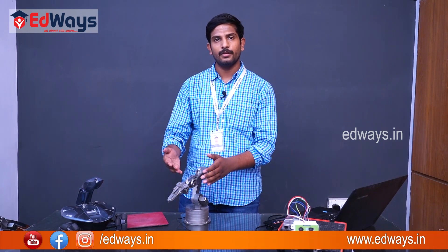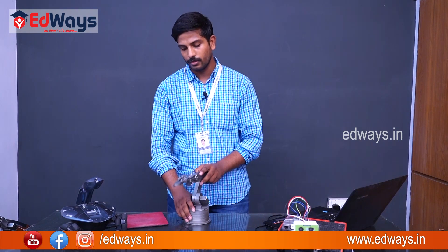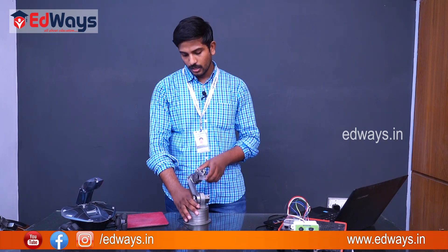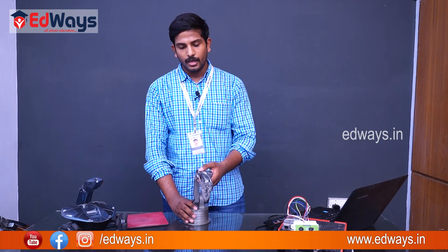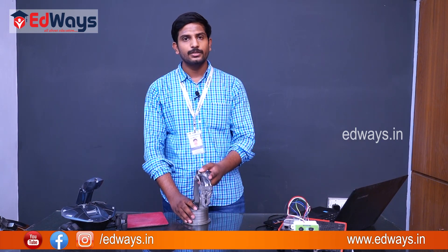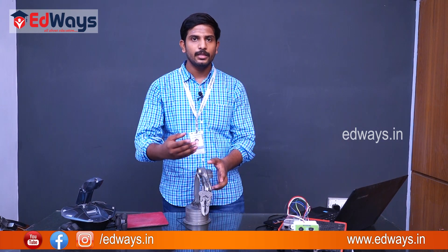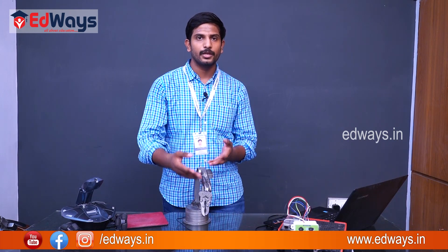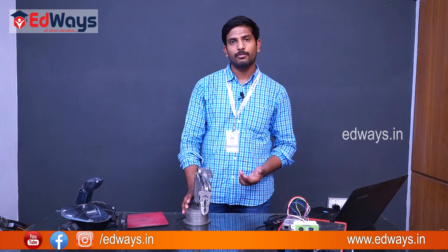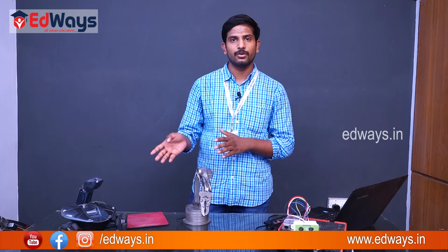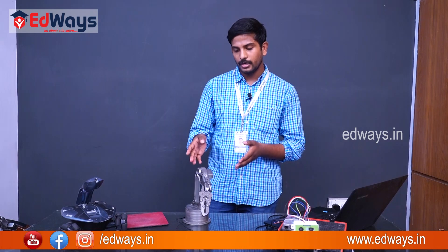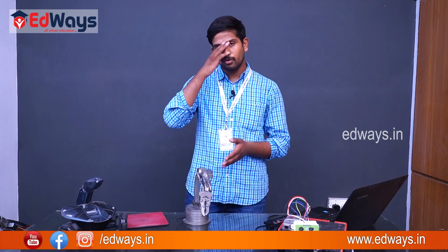A major difference between AI and traditional robotics is in the servo control. In robotics, we need to give the angle for each servo at every step. In artificial intelligence, we just give the start point and the end point, and the robot designs its own movement path.